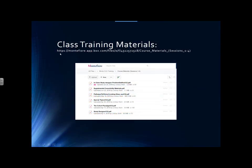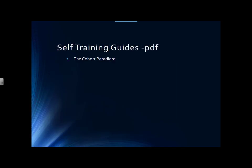We have class training materials. Go to the Box address and you'll see all the individual class manuals used in our training. What you see now may be different because we update this on a regular basis. The self-training guides include The Cohort Paradigm, Study Designer, In-Class Problem, Discovery of Side Effects Using Study Designer, and Special Topics.